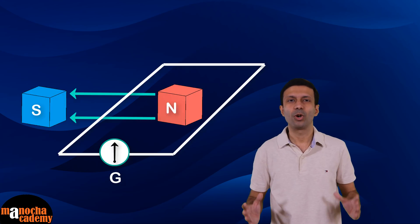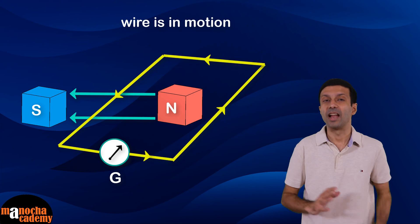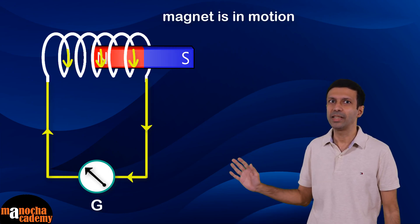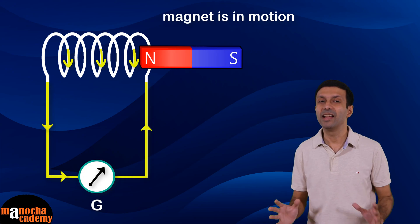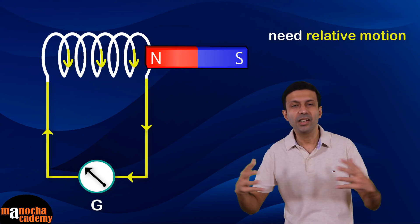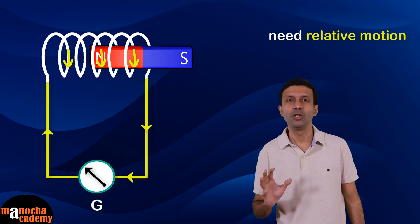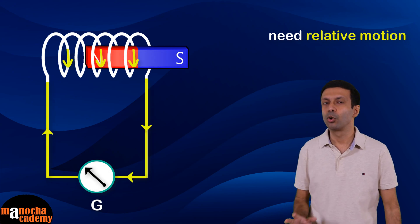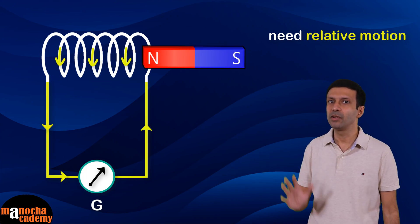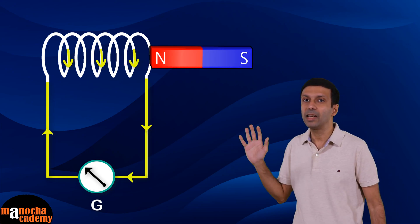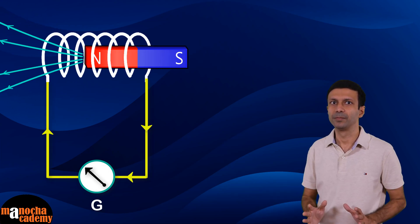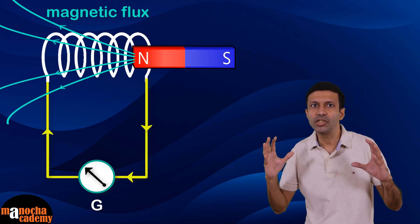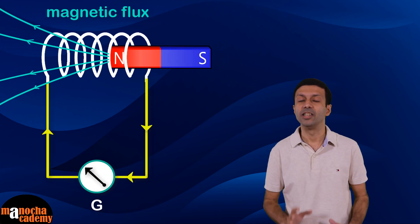In the first example, the magnet was fixed and the wire was in motion; in this example, the coil is fixed and the magnet is in motion. In both cases, a current is induced — you need relative motion between the wire and the magnet to induce a current. This is the principle of electromagnetic induction. When there is relative motion between the coil and the magnet, the magnetic field lines cutting through the coil are changing. The magnetic field lines linked with the coil is called magnetic flux, and it is this changing magnetic flux that induces a current in the coil.